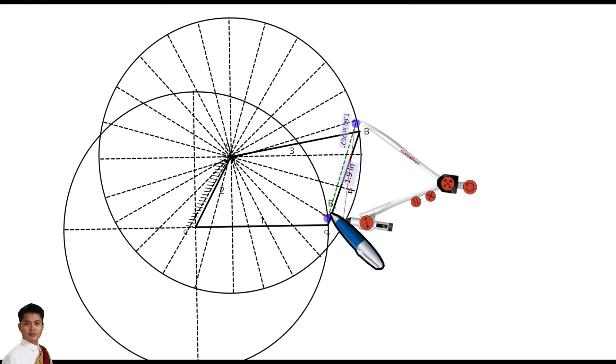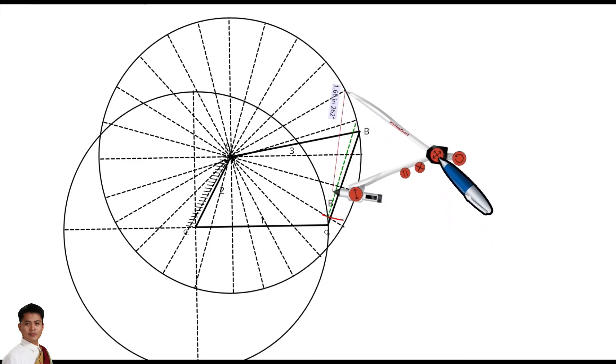So this will be the next position of our crank 4. And then the same procedure for the next position of B. Again, draw an arc that will pass through the path of Q4. And make sure that the point of your compass is at the next position of your B. So this will be the next point for Q2.